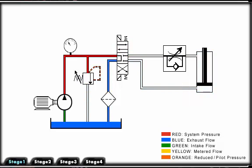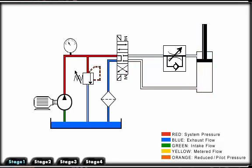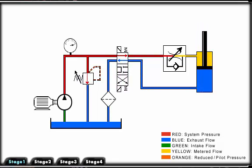When we move the flow control to the other line, the cylinder extends at an unrestricted rate. We can restrict the flow to the cylinder so that it will retract at a reduced rate.